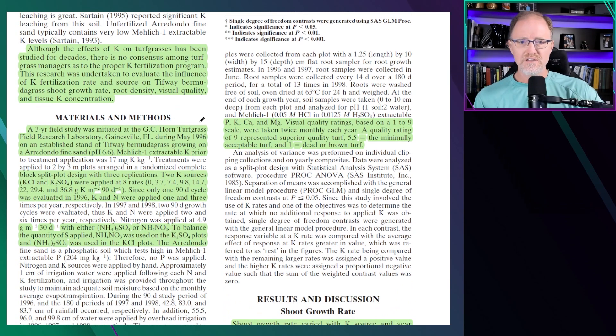This was a three-year study conducted in Gainesville, Florida, from 1996 through 1998. The Mehlich-1 extractable potassium prior to treatment was around 17 parts per million, which was considered low and still is considered low. The Mehlich-3 on that soil, there was also a correlation done, and that's around 17 or 18 as well for Mehlich-3.